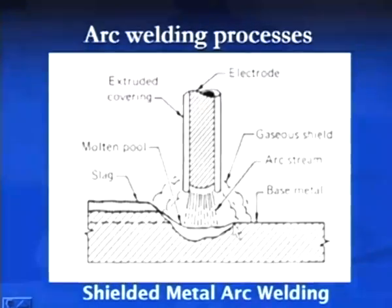Coalescence or the joint in this welding process is produced by melting of the base metal and the consumable electrode, and after that the molten metal is allowed to solidify freely.